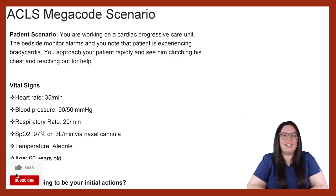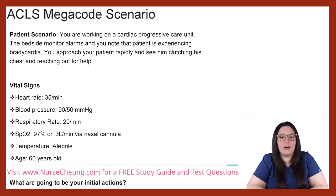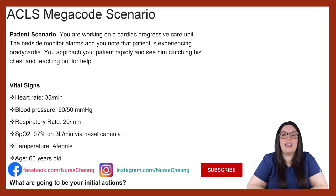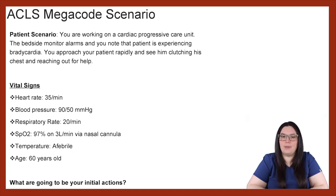Let's begin with our patient scenario. You are working on a cardiac progressive care unit. The bedside monitor alarms and you note that the patient is experiencing bradycardia. When you approach your patient, you see that they are clutching their chest and reaching out for help. The vital signs: heart rate 35, blood pressure 90 over 50, respiratory rate 20, SpO2 97% on three liters nasal cannula, temperature afebrile, and the patient is 60 years of age.